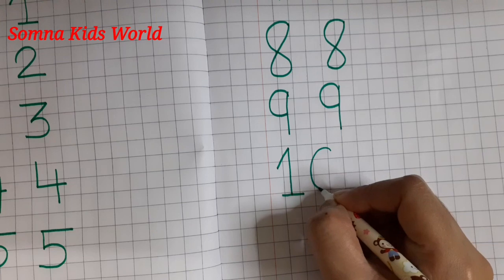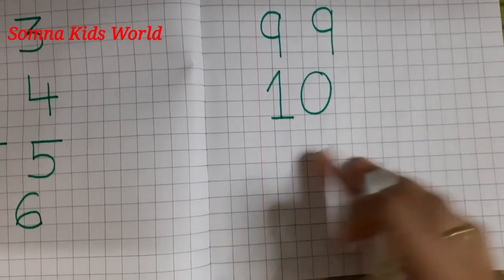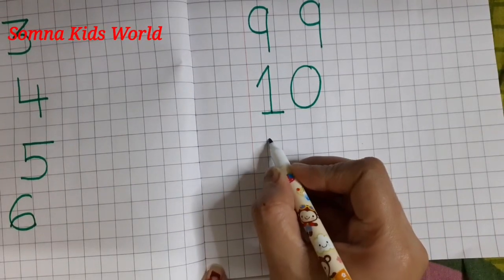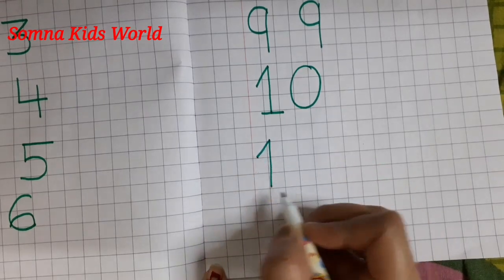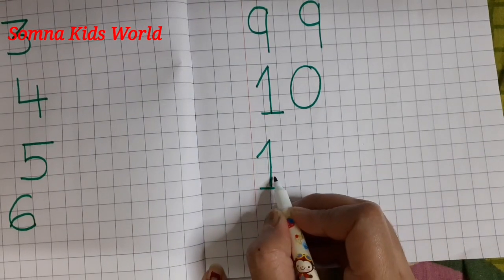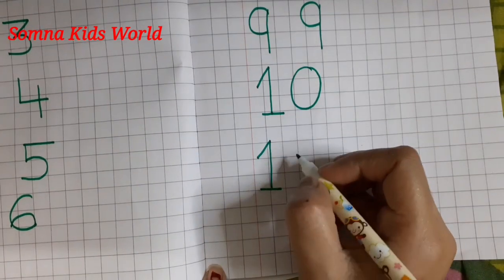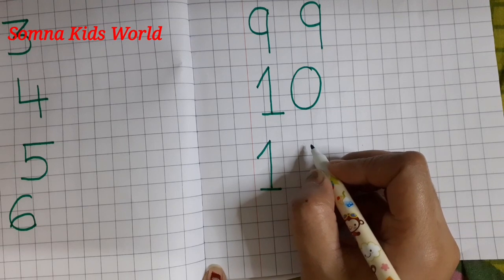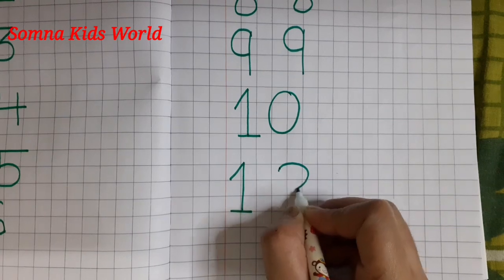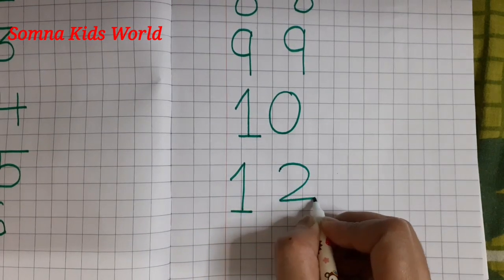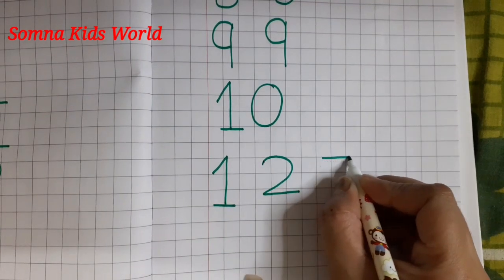Then make a zero circle. So let us practice once again. How to write number one: standing line, slanting line, slanting line — one, one. Then after one, two: make a curve, slipping line — two, two. Then after two, three: slipping line, slanting line.